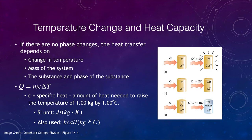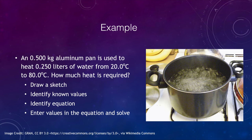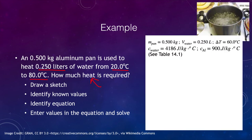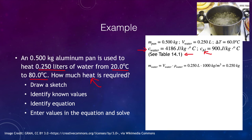Let's work through a couple of examples. The first example: a 0.5-kilogram aluminum pan is used to heat 0.25 liters of water from 20 degrees Celsius to 80 degrees Celsius. We want to know the amount of heat required. We need to look up the specific heats of water and aluminum — you can use Table 14.1 in the textbook. The mass of water equals volume times density. Since the density of water is 1000 kilograms per cubic meter, 0.25 liters equals 0.25 kilograms.